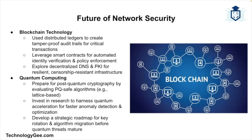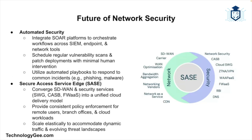Then we have quantum computing, which poses both opportunities and challenges for network security. While it can enhance encryption and solve complex security problems, it also threatens to break current encryption algorithms, so organizations must prepare for the future implications of quantum computing. Then there's automated security — automation in network security can streamline processes such as threat detection, incident response, and patch management, reducing the burden on IT staff and improving response times.